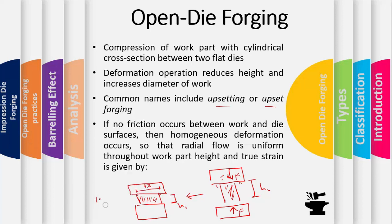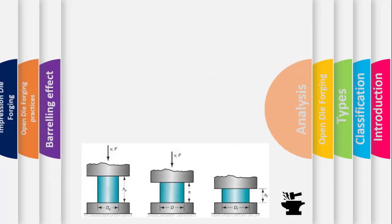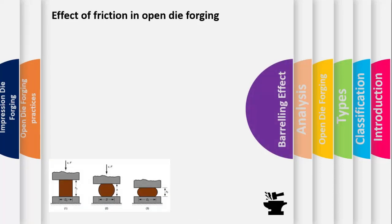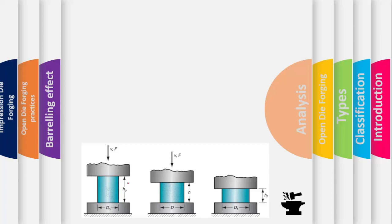Inhomogeneous deformation occurs when some parts of the metal flow more than others. This is the ideal case of homogeneous deformation when we have no friction between the work part and the die. When there is friction between the work part and the die cavity, it will experience some inhomogeneous deformation. When performing the forging process, the true strain based on deformation is: ε = ln(H₀/Hf), where H₀ is the initial height and Hf is the final height.